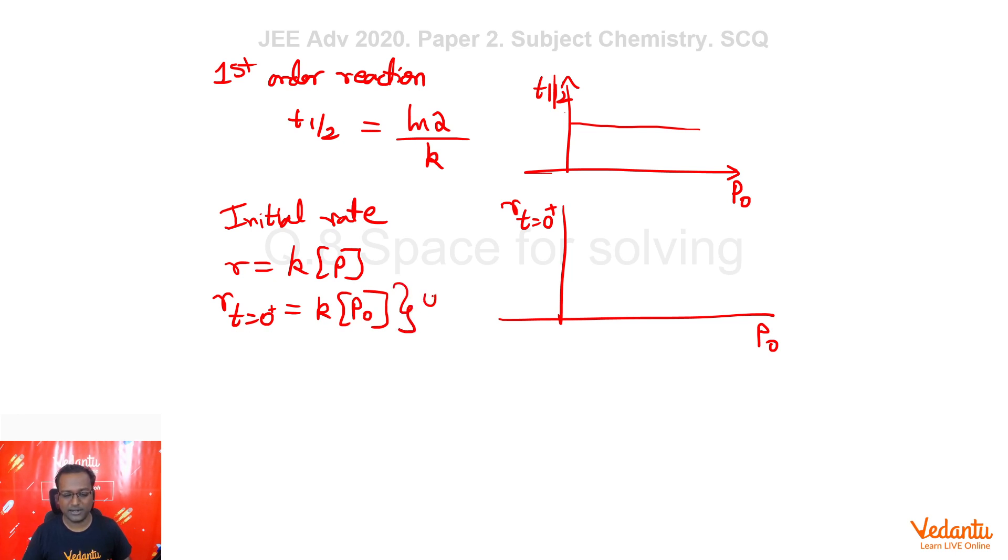So, we can see here that if I have to plot initial rate, that is rate at T equal to 0 plus, that is just the moment when reaction started versus P naught, we can see that this will be a y equal to Mx type straight line. So, this will be your simple straight line, y equal to Mx type. Now, next, for a first order reaction, the concentration of the reactant at any time T will be equal to initial concentration into E to power minus KT.